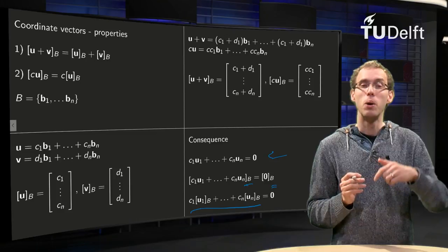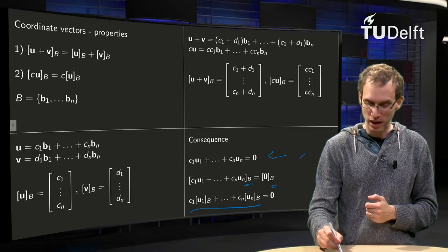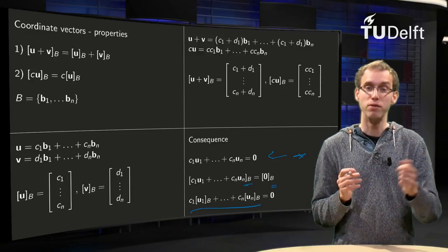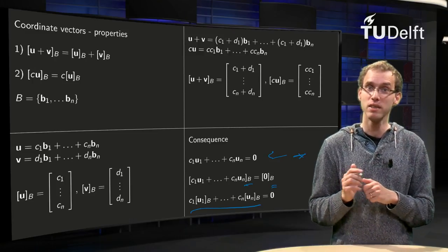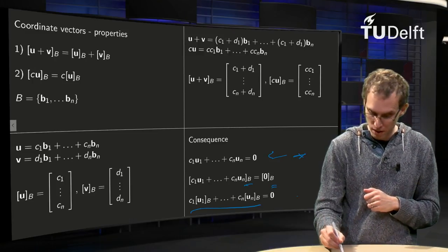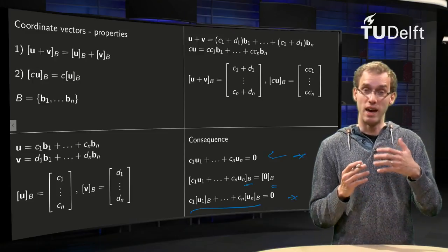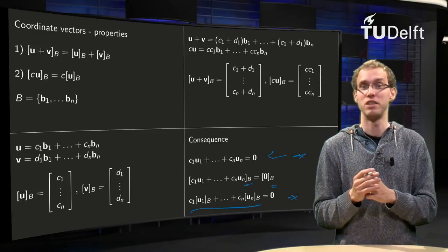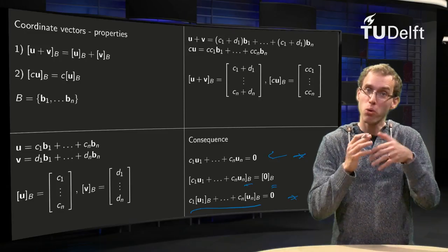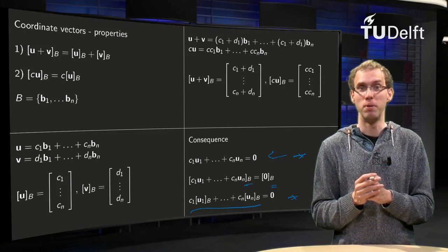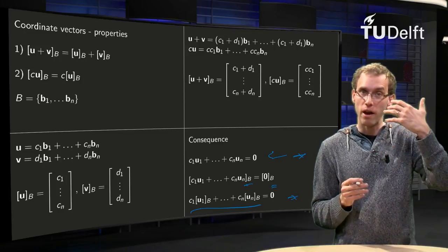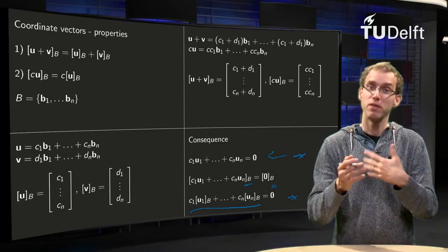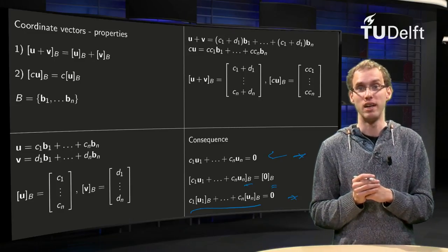But what does this mean? Well, if my first equation over here only has a trivial solution, that means my v1 up to vn are independent, then the last equation also has the same solution, also only has a trivial solution, so the coordinate vectors are linear independent. So the vectors u1 up to vn are independent, even if its coordinate vectors are linear independent.